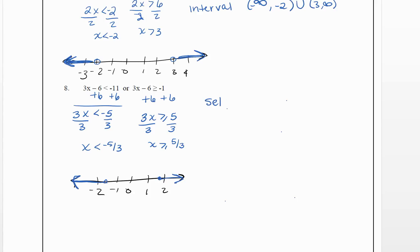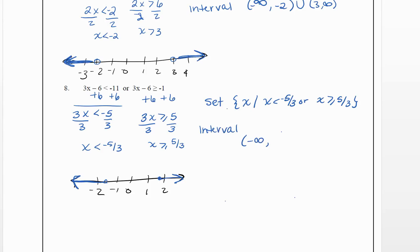In set notation, we write: x such that x is less than negative 5 thirds or x is greater than or equal to 5 thirds. In interval notation, the first piece is negative infinity to negative 5 thirds with a parenthesis, since it's a strict less than. Then union, and the second piece is from 5 thirds to positive infinity with a bracket, since it includes 5 thirds.